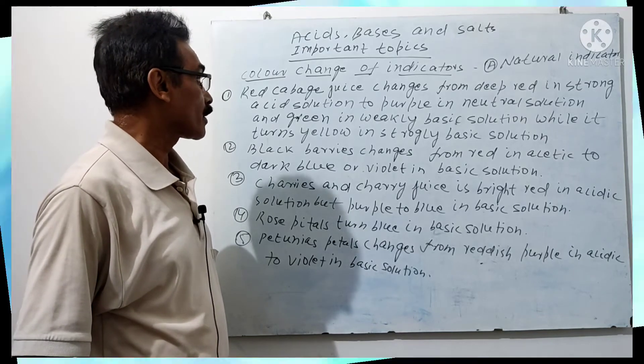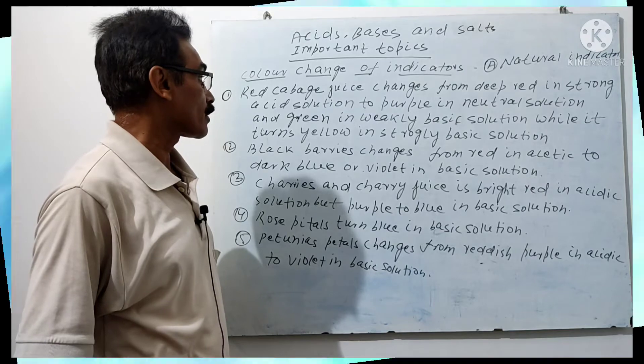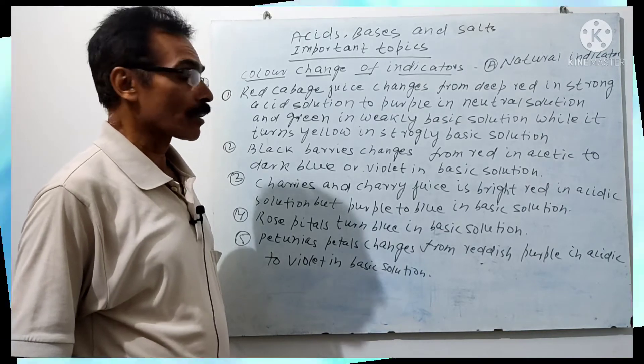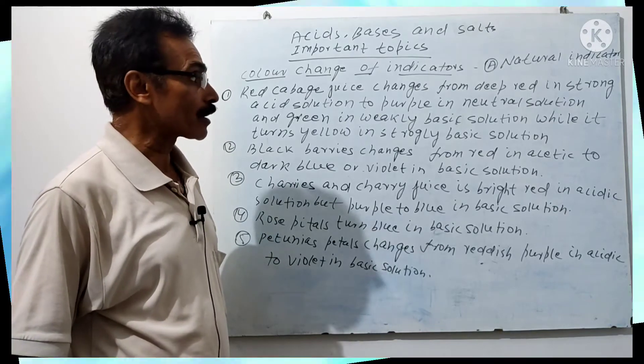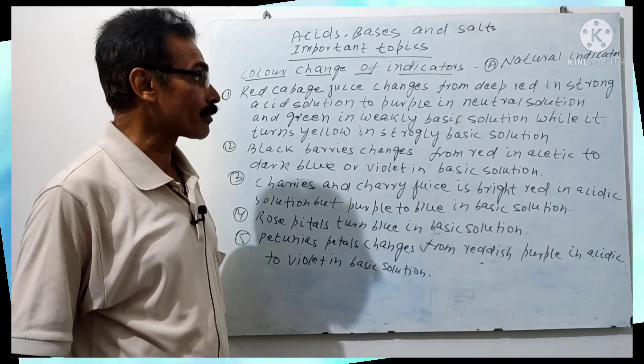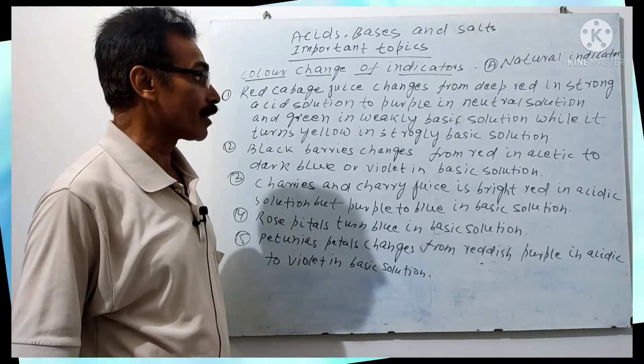Number 1: Cabbage juice changes from green to green in strong acid solution, to purple in neutral solution, and green in weakly basic solution. While it turns yellow in strongly basic solution.